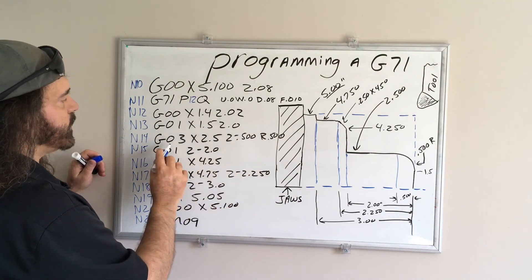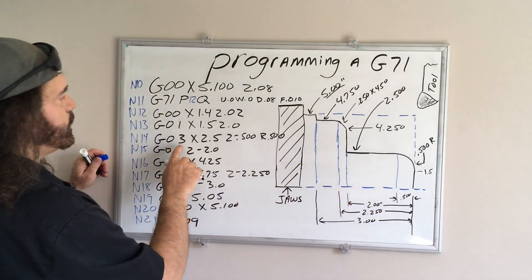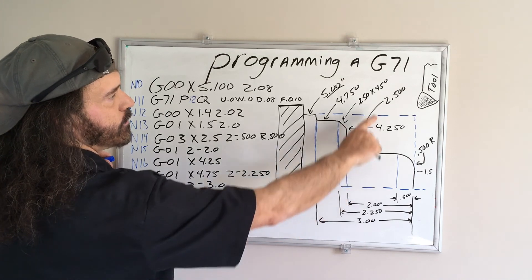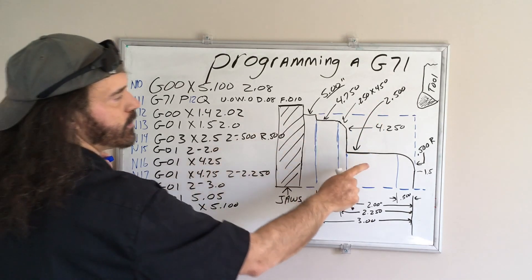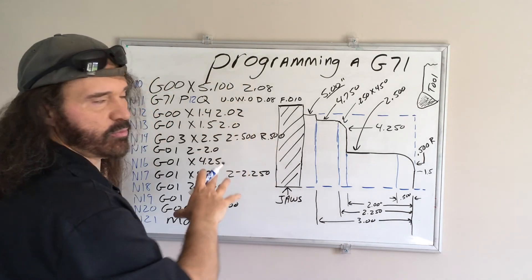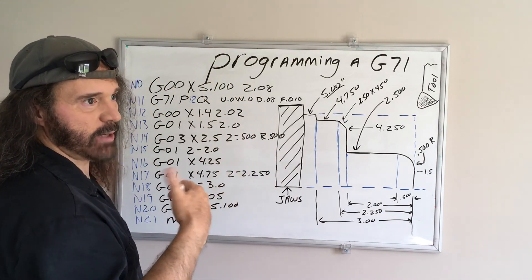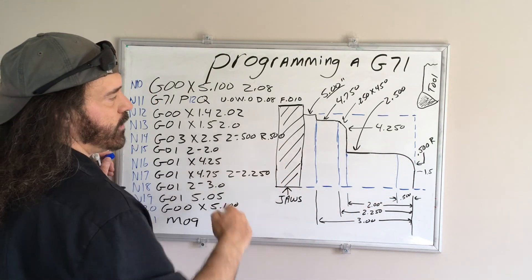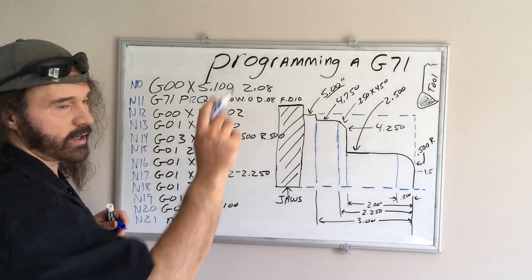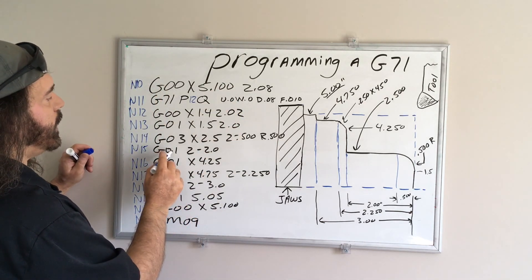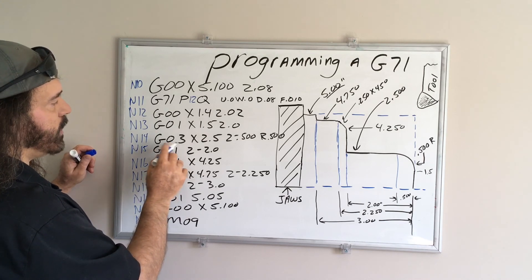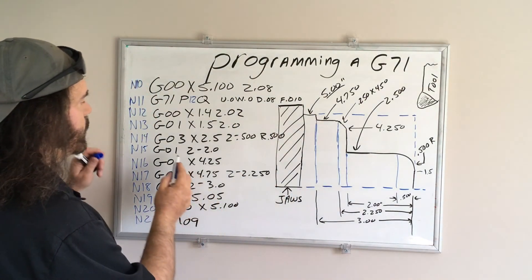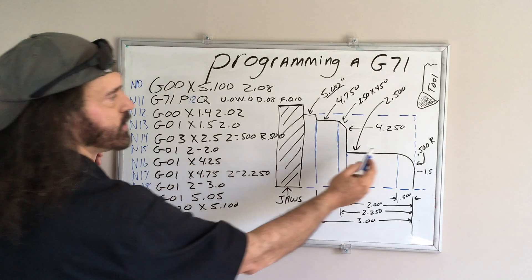So then we're going to do a counterclockwise interpolation, so we're going to go up to x2.5, which is the diameter I wanted to make this at, z negative 500, because we're in absolute programming, and I explained that in a previous video, the difference between absolute and incremental. So we're a half inch radius, so then you have to do an r500 radius, .5. Then you make sure you have to write G01 after that, because you don't want to forget to do that, because it'll stay in, once you activate that, it stays active until it's cancelled.